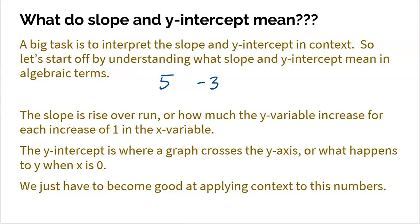What about the y-intercept? The y-intercept is where the graph crosses the y-axis — basically what happens when x is 0. If the y-intercept is 10, then y is 10 when x is 0. If the y-intercept is negative 7, then y is negative 7 when x is 0. So the y-intercept answers: what happens to y when x equals 0? We need a strong understanding of these numbers algebraically before applying them in context.